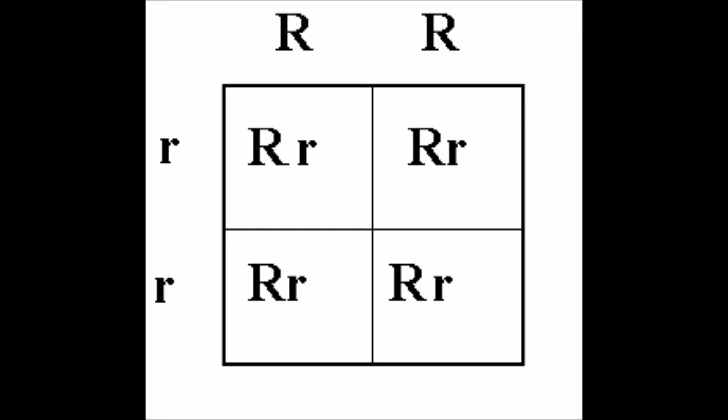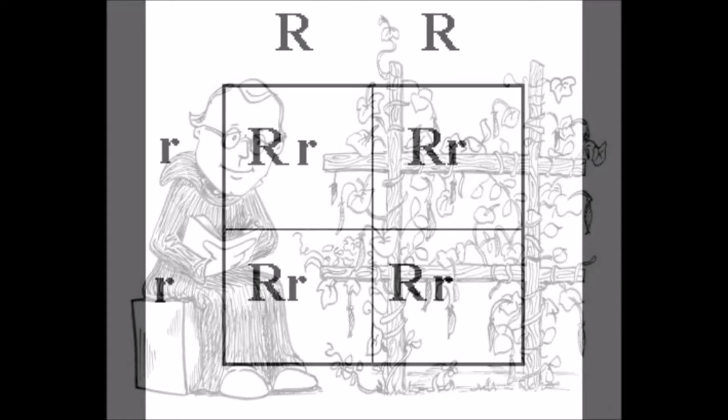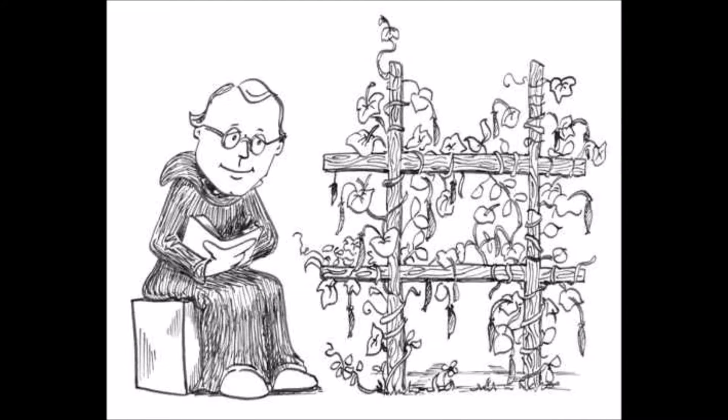A shy gene is called a recessive gene, and like wrinkledness, it is not always seen. A bold gene is called a dominant gene, for like roundness in peas, it always is seen.